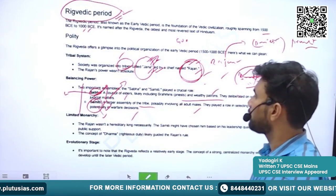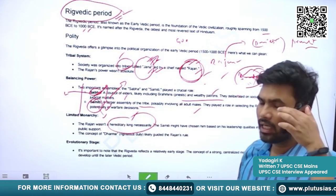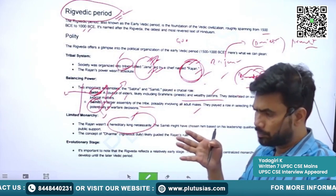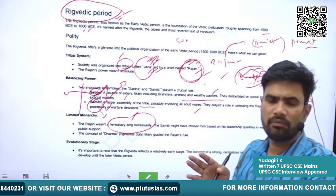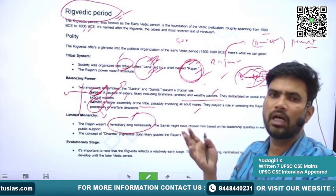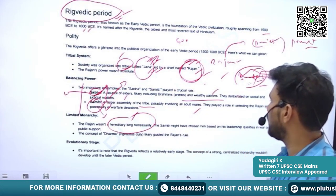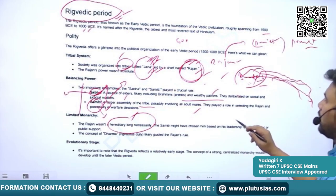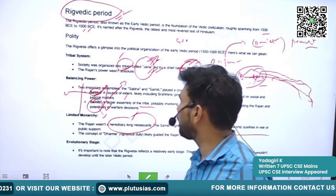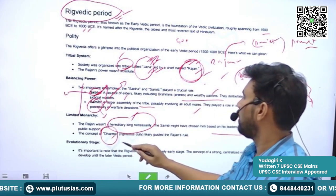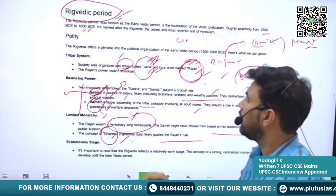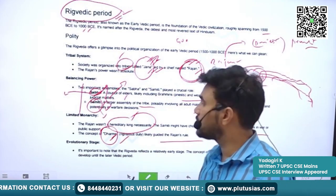We can say this was a system of limited monarchy. The position of Rajan was not hereditary — whoever seemed fit was appointed as Rajan, chosen based on leadership qualities in war and public support. The concept of Dharma also emerged during that period and guided the Rajan in his duties.